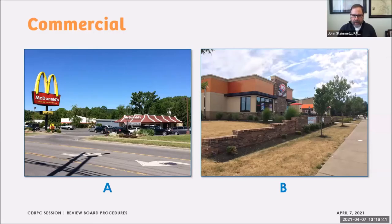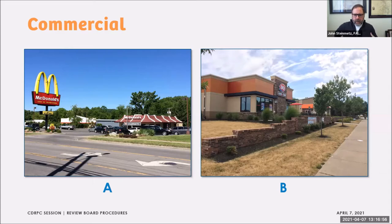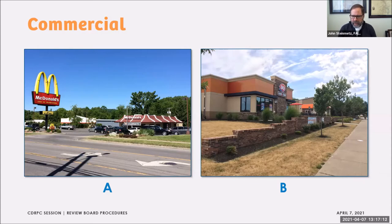Our second of three pairings moves on to commercial. These are franchise restaurants — McDonald's on the left and a Dairy Queen on the right, with what I think is an AT&T mobile store beyond. If this were your town, village, or city's commercial corridor or district, and you were presented with the McDonald's site placement and architecture on the left or the Dairy Queen on the right, would you have a preference?